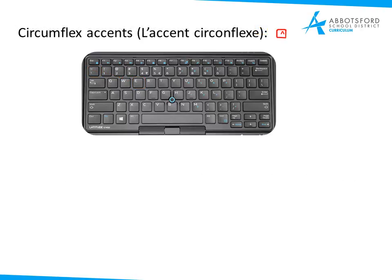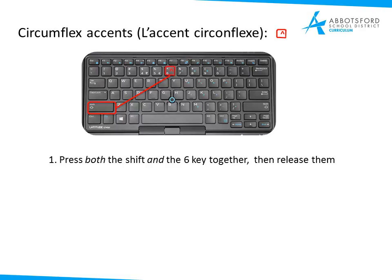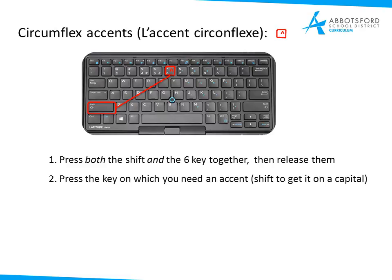For the circumflex accent — l'accent circonflexe — same deal. You'll notice it's above the 6 key. Characters above your numbers at the top of the keyboard require Shift to access. So press both Shift and the 6 key together, then release them and select the letter you want to put your circumflex onto. Often it's an E in French, but it could be an A or an O — various different letters depending on the language. Use Shift again to get it onto a capital E, for example. Very straightforward.